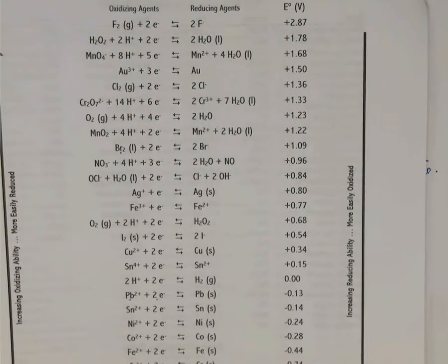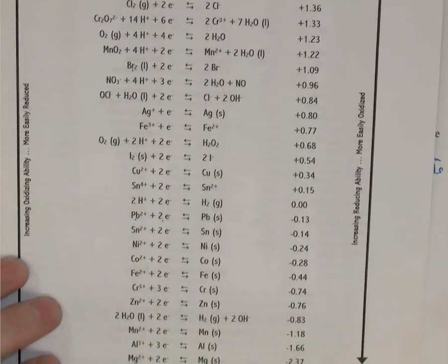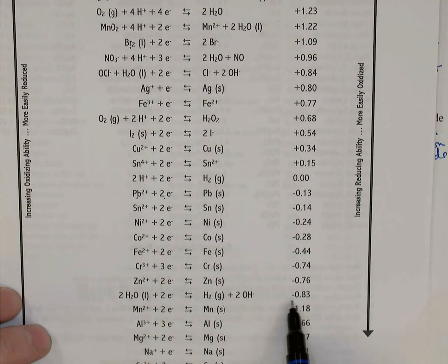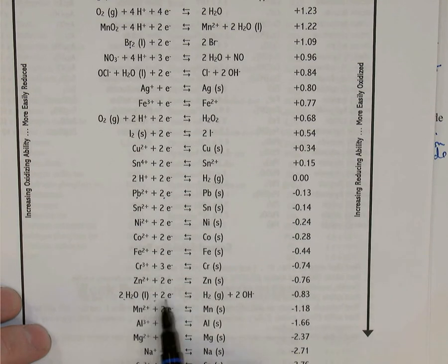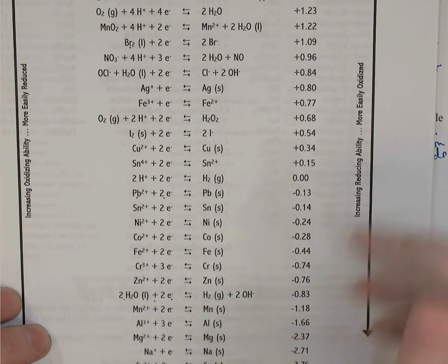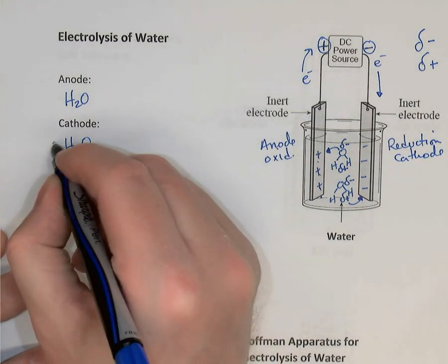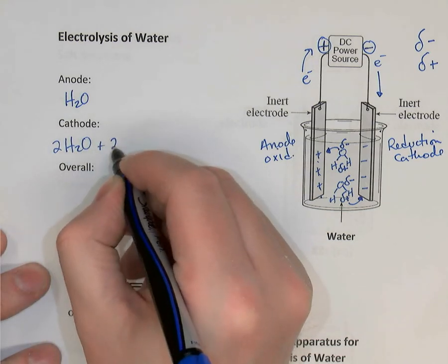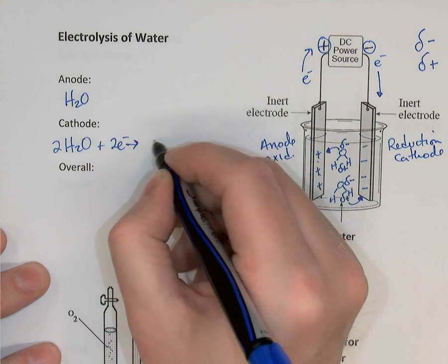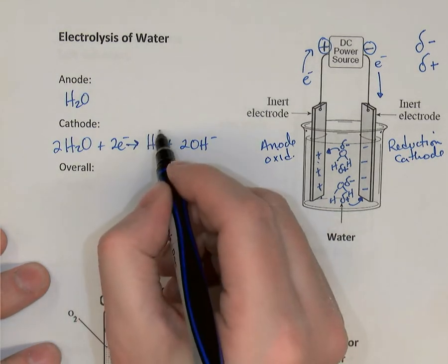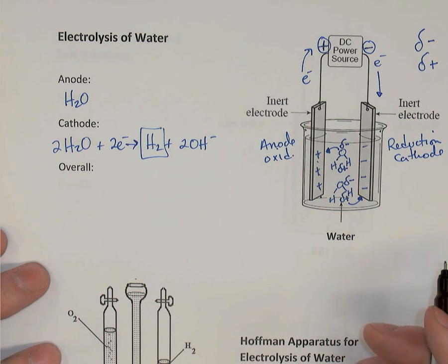Looking at the reduction chart, we find the reaction where water is reduced: at -0.83 V, two water molecules gain two electrons to make hydrogen gas and two hydroxide ions. Hydrogen gas is produced when water gets reduced, so hydrogen will be produced at the cathode.